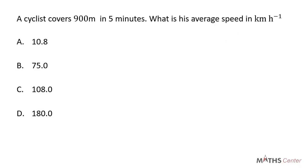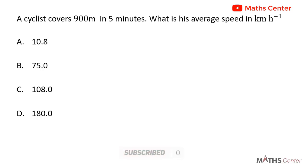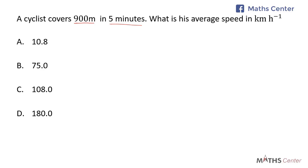A cyclist covers 900 meters in 5 minutes. What is his average speed in kilometers per hour? This is a multiple choice question. The distance covered is 900 meters and the time is 5 minutes. To find the average speed in kilometers per hour, we need the distance in kilometers and the time in hours. Average speed equals distance divided by time.